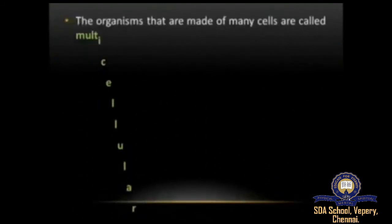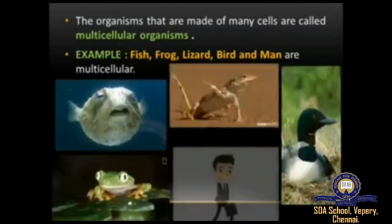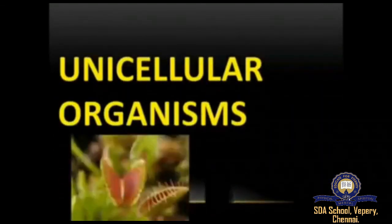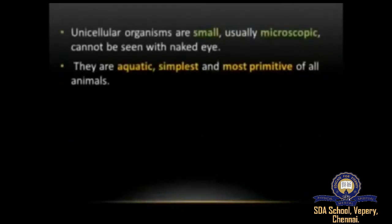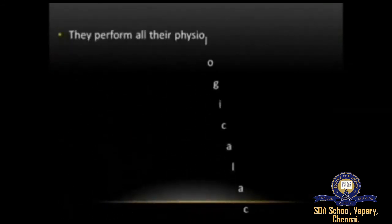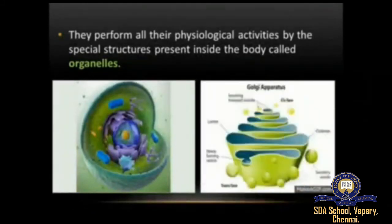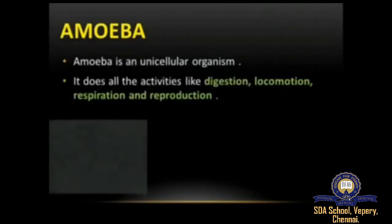Multicellular organisms are made up of many cells — examples are fish, frog, lizard, bird, and man. Unicellular organisms are small and microscopic, cannot be seen under the naked eye, are mostly aquatic, and are the simplest and most primitive of all animals. Organelles are special structures present inside unicellular organisms that perform all their physiological activities. Amoeba is a unicellular organism that performs digestion, locomotion, respiration, and reproduction.